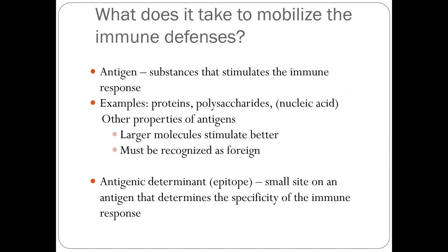Now let's talk about some immune system defense concepts. What is called an antigen? It's usually a foreign substance that stimulates the immune response in the human body. From the bacteria standpoint, a whole bacterium is not called an antigen. Antigen refers to specific parts of a microorganism or bacterium — for example, proteins, polysaccharides, or nucleic acids. Regarding antigens, usually recognized as foreign, the larger the molecule, the better it stimulates the immune response. Antigens always have specific sites called epitopes, which are small sites on the antigen that determine what kind of immune response will happen.